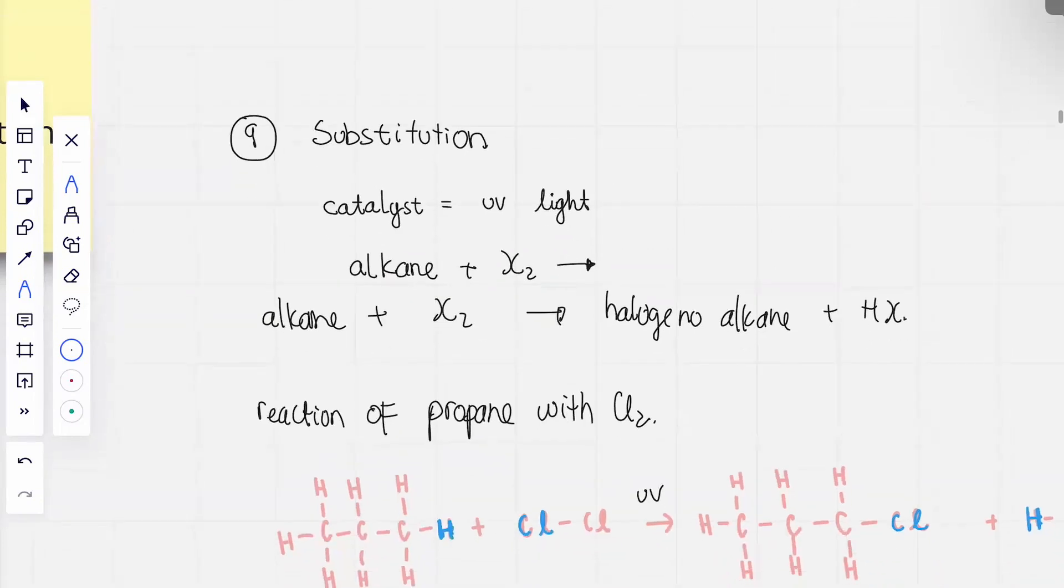Wait, so is substitution the same as halogenation or no? In this case, yes. Substitution, or for secondary level, is halogenation. But if you go to JC 1 or 2, then there are other substitution reactions. For now, yes.